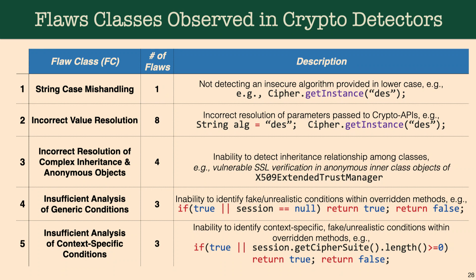Based on their properties, we created five flaw classes, and we noticed that some of these flaws are not specifically tied to specific crypto APIs, but are more likely based on usage patterns. For flaw class one and two, they are about string and inline value resolution. The examples are for Cipher, but similar flaws can be observed for other similar crypto APIs such as MessageDigest as well as SSLContext.